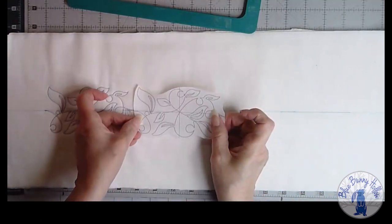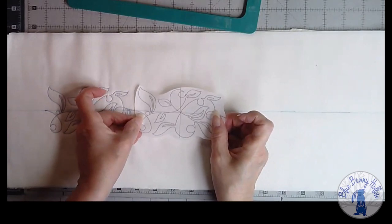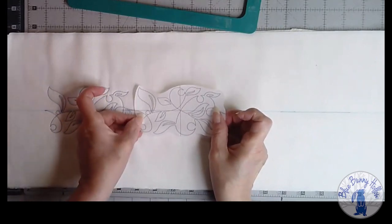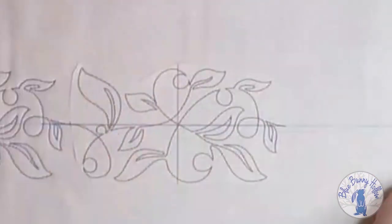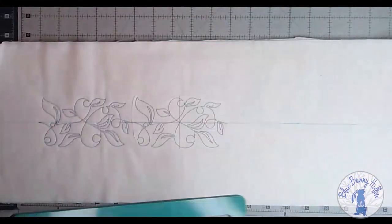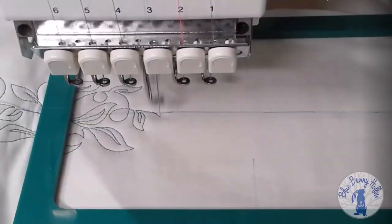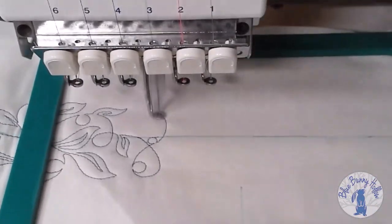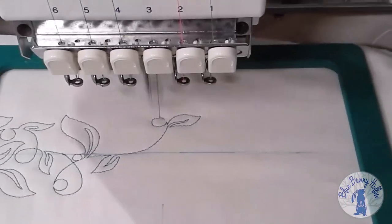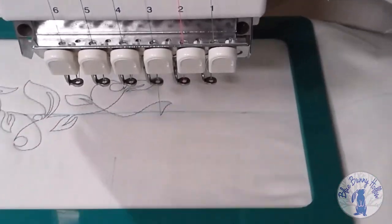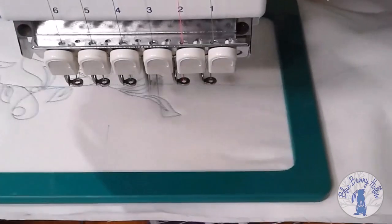Now place the template on the project, lining up the last stitch of the quilt with the first stitch of the template. Now hoop as we did before and place the hoop into the embroidery machine. Line up the start and end needle points as we did for the first hooping and embroider the second design. Repeat until you have the project complete.